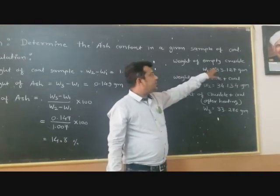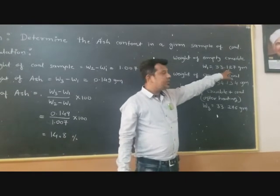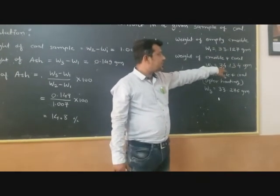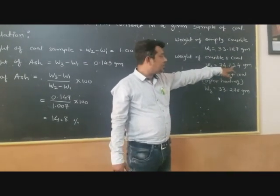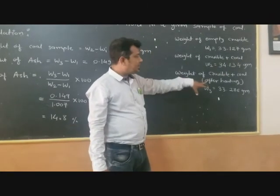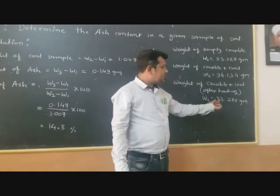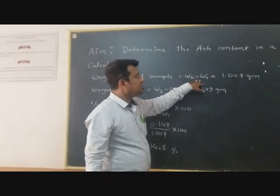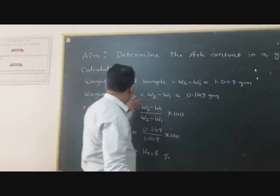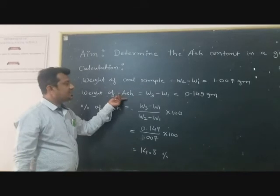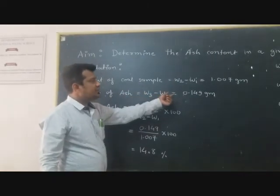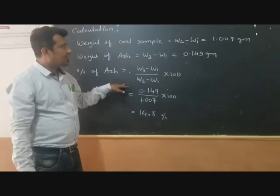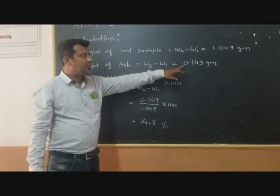Now, the weight of coal sample W2 is 34.134 grams, and after heating, our weight W3 is equal to 33.276 grams. Weight of coal sample: W2 minus W1 is equal to 1.007 grams. Weight of ash content: W3 minus W1 is equal to 0.149 grams. So, the ash content difference is 0.149 grams.